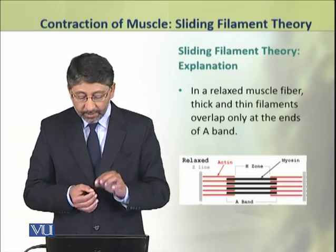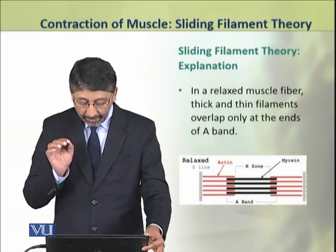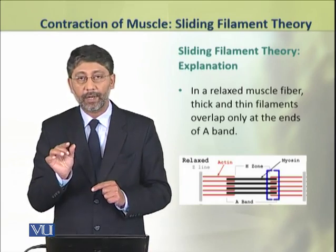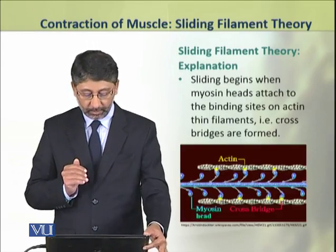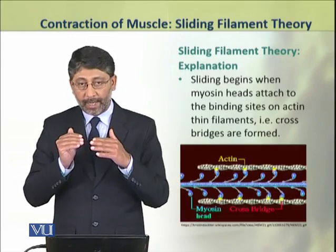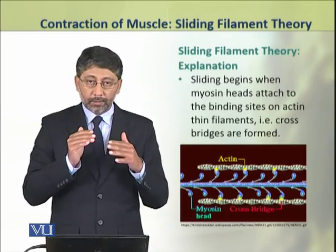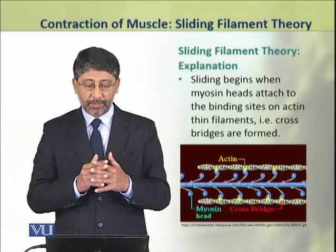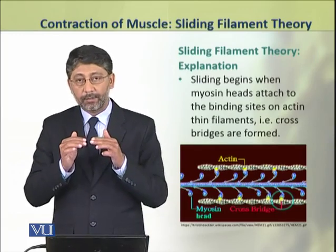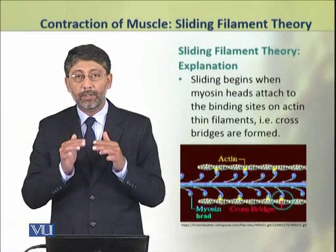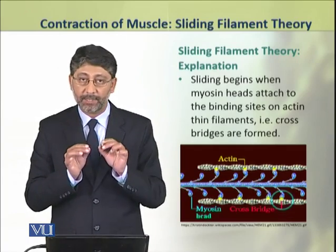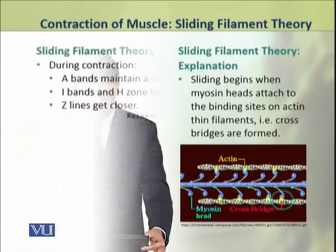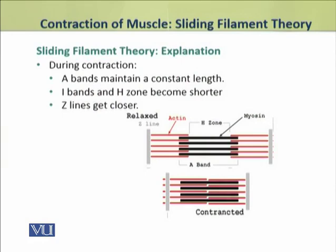The thin and thick filaments overlap only at a small region of the A-band. When sliding begins, there is formation of cross bridges between the thick and thin filaments due to the myosin heads binding with the actin protein at specific sites. During contraction, the A-band maintains a constant length.